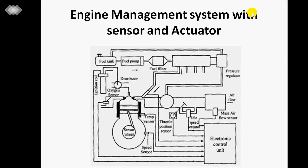Several sensors are employed in the engine management system. The engine speed sensor is an inductive type sensor used to measure engine speed. A toothed wheel contacts the speed sensor; whenever the teeth make contact, the inductance changes and produces an oscillating voltage, which helps control the engine speed.